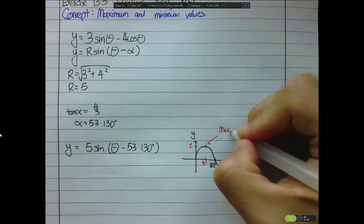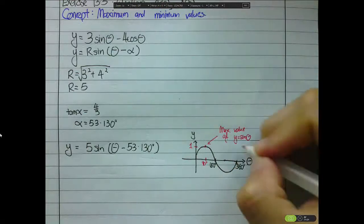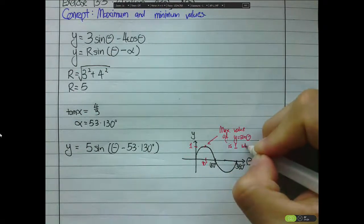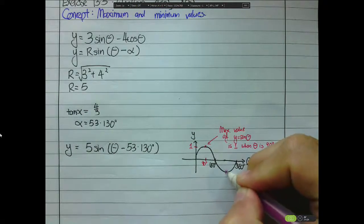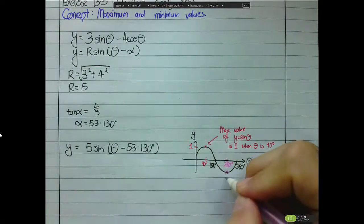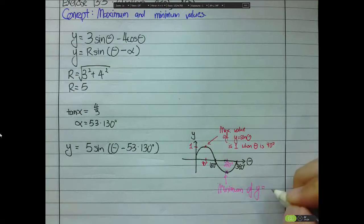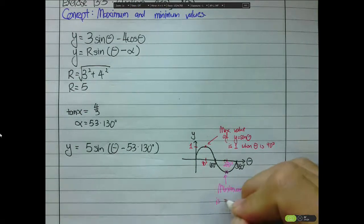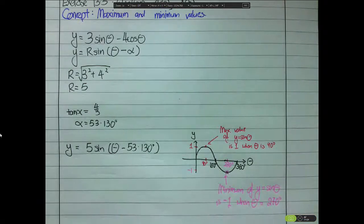The maximum value of y = sinθ is 1 when θ = 90°. Similarly, the minimum value occurs at 270°, so the minimum value of y = sinθ is -1 when θ = 270°.